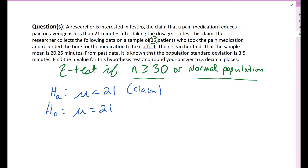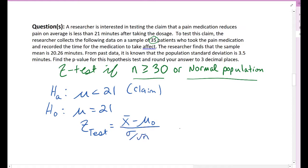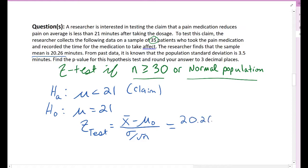Next, to get the p-value we calculate the test statistic. The formula is z = (X-bar − μ_null) / (σ / √n). Our sample mean X-bar is 20.26, mu-null is 21, the population standard deviation is 3.5, and n is 35. So we compute: (20.26 − 21) / (3.5 / √35).